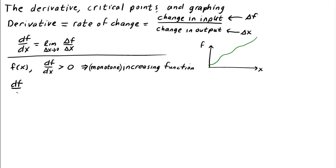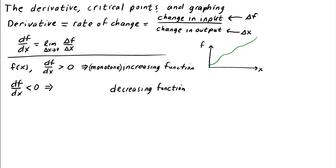Conversely, if we are told that df/dx is negative everywhere, then we know that the output f must always decrease when x increases. We call such an f a decreasing function, or even monotone decreasing.